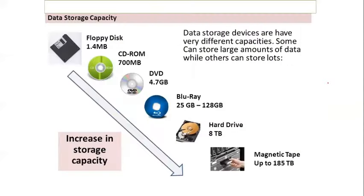Data storage capacity of secondary memory in increasing order: Floppy disk — 1.4 MB, CD-ROM — 700 MB, DVD — 4.7 GB, Blu-ray — 25 to 128 GB, Hard disk — terabytes, Magnetic tape — up to 185 terabytes. Storage capacities vary greatly across devices and the capacity itself may be an exam question.